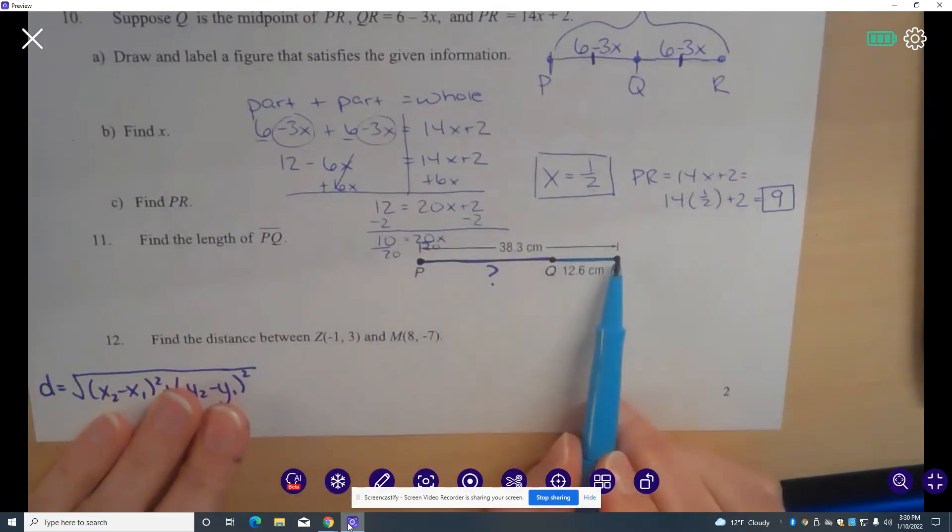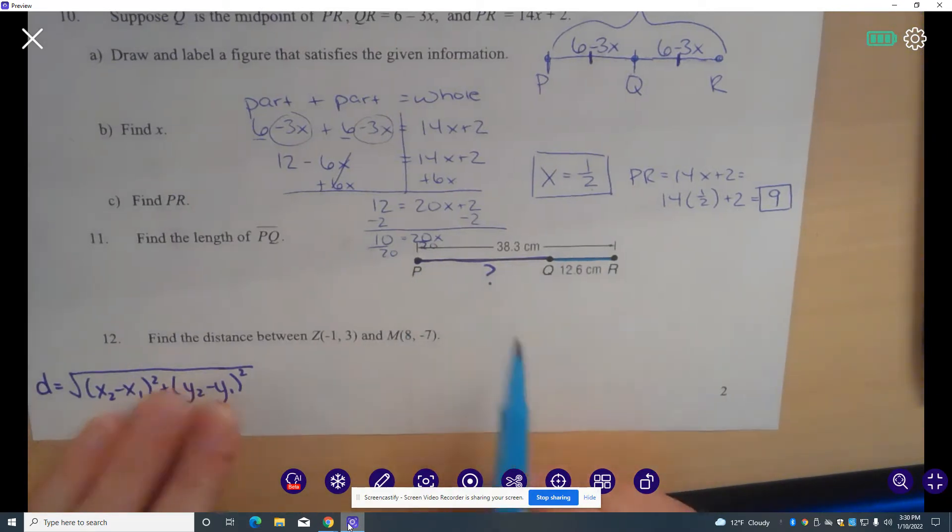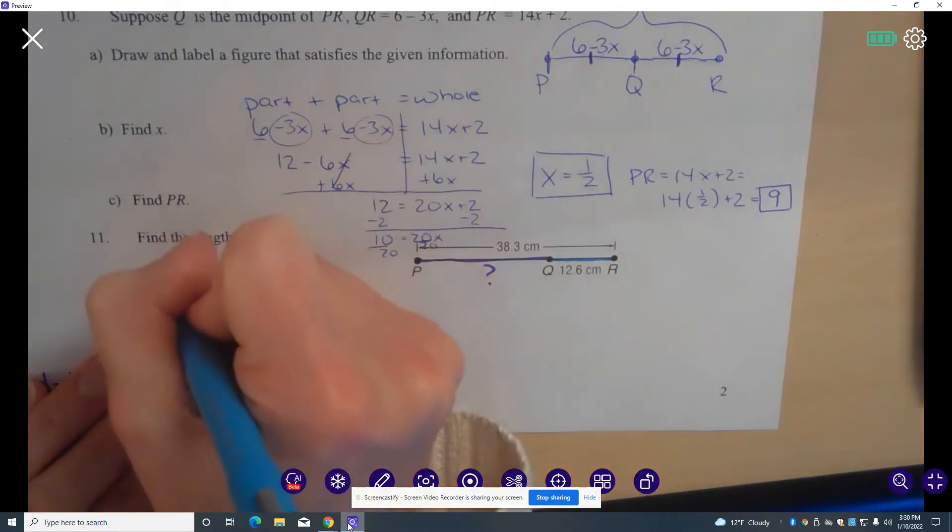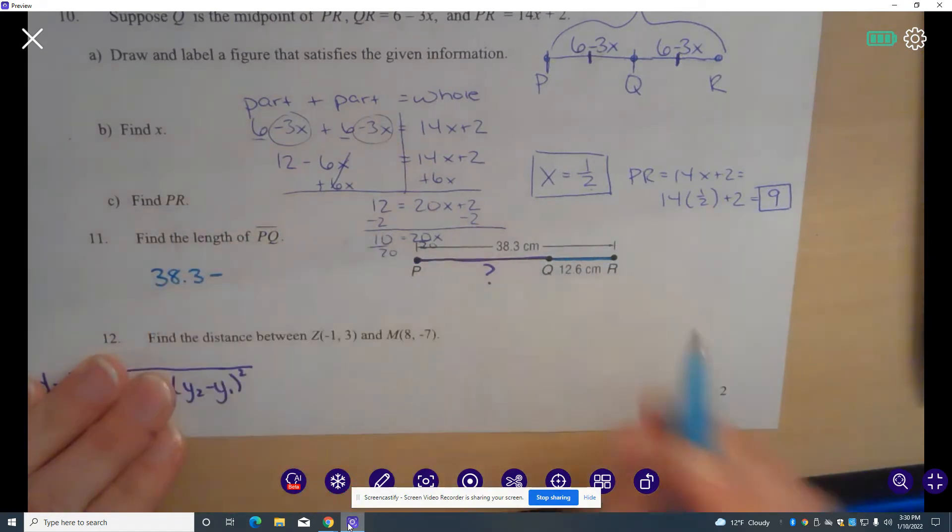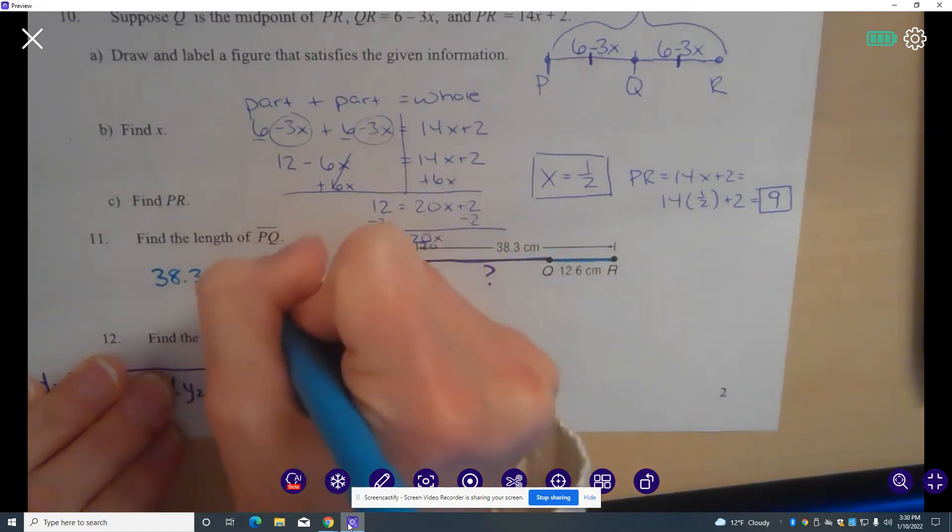Well, if I know the total and I know this section, what I can do is I can subtract this section from the total to get what's left over, which will be the length of PQ. So I'm going to take my total, and I'm going to subtract 12.6